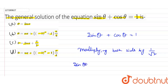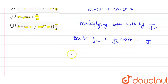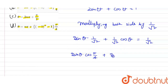sin theta into 1 by root 2 plus 1 by root 2 cos theta, that is equal to 1 by root 2. Now sin theta into cos pi by 4 plus sin pi by 4 into cos theta, that is equal to sin pi by 4.